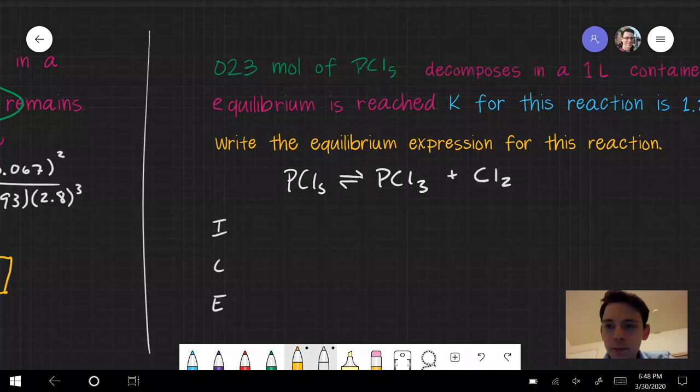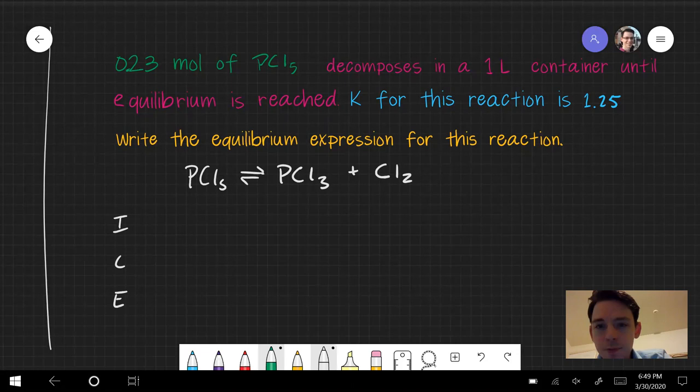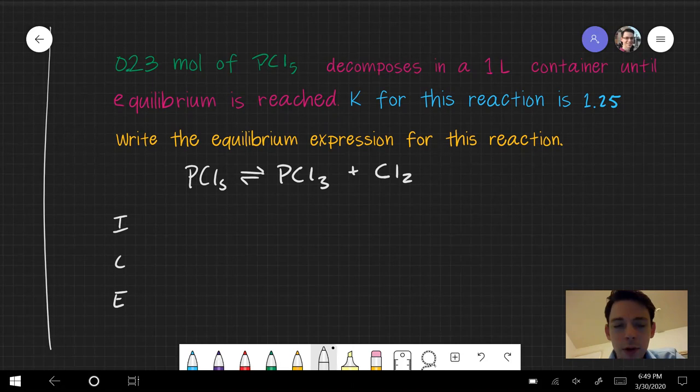We're going to look at one more, and I encourage you to try this one on your own. It says 0.23 moles of PCl5 decomposes until equilibrium is reached, and K for this reaction is 1.25. Write the equilibrium expression for this reaction. So again, I encourage you to take a minute. See if you can fill out this ICE table on your own.